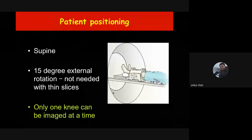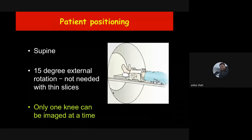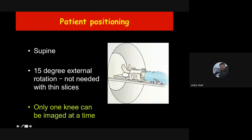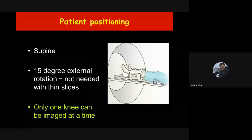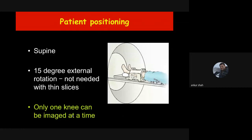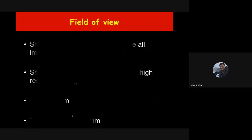The patient is placed in the supine position with a little bit of external rotation. Please remember we can do only one knee joint at a time — we can do both hip joints simultaneously but that is not true for the knee joint. For right and left knee we have to do two completely separate MRI studies.